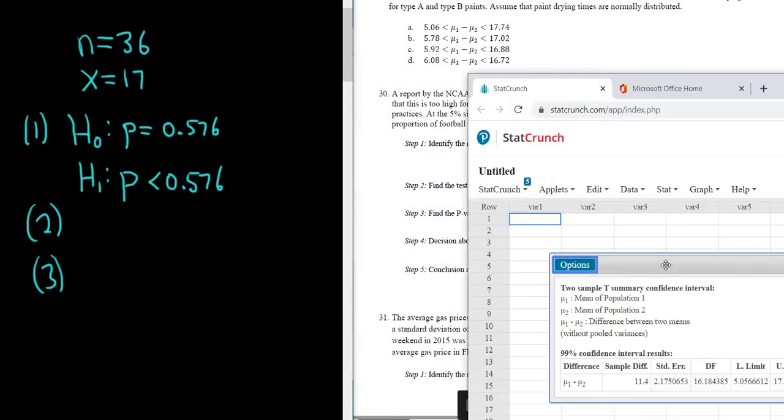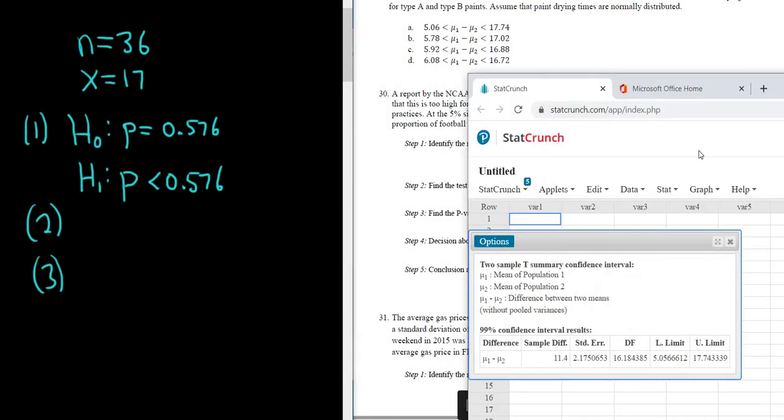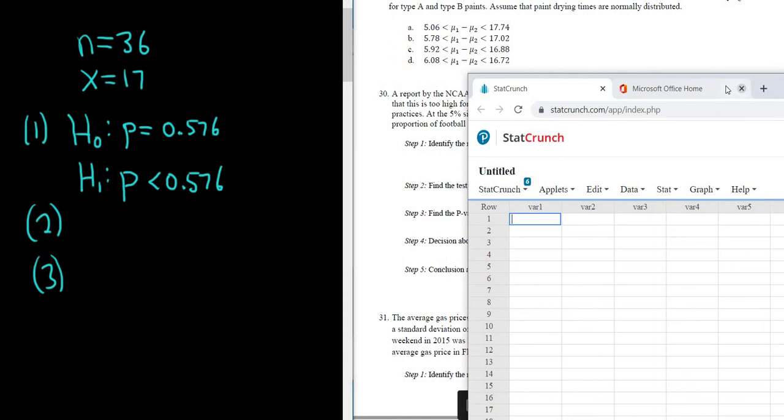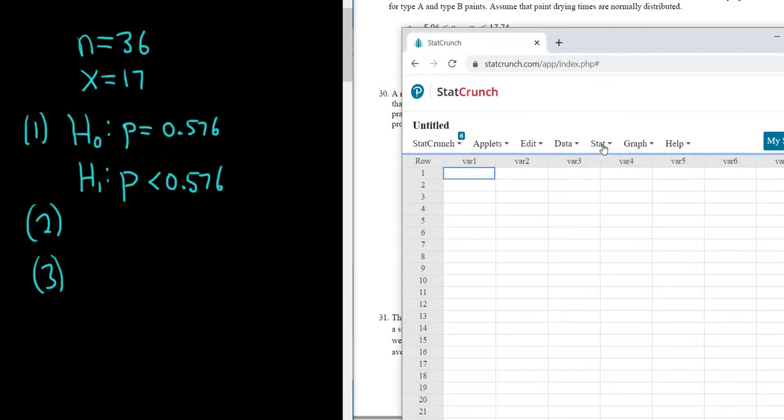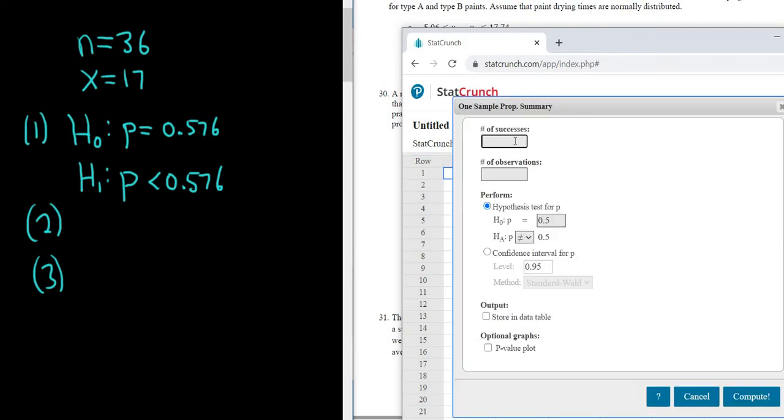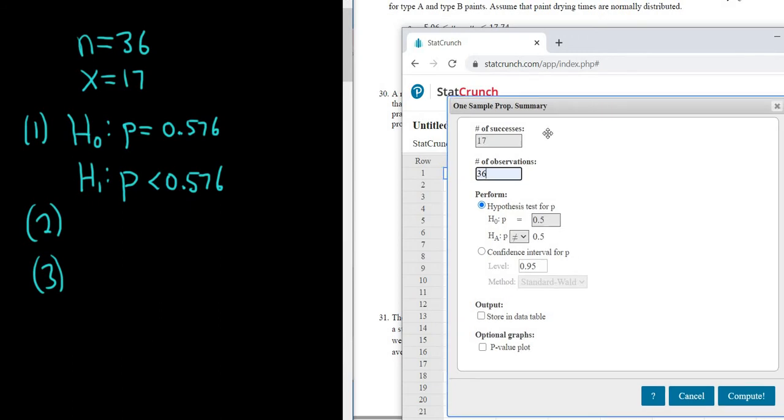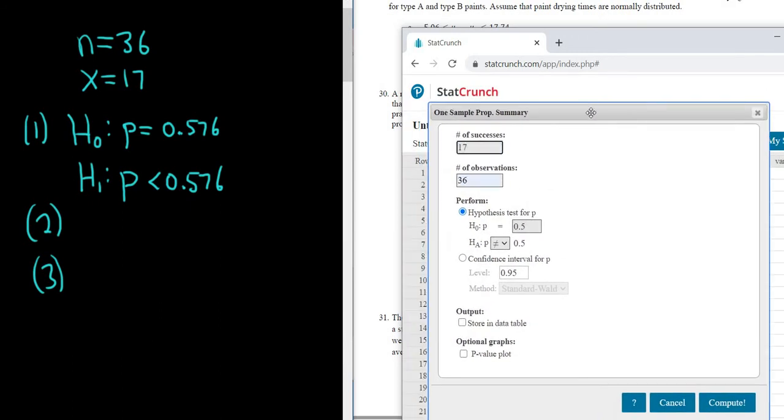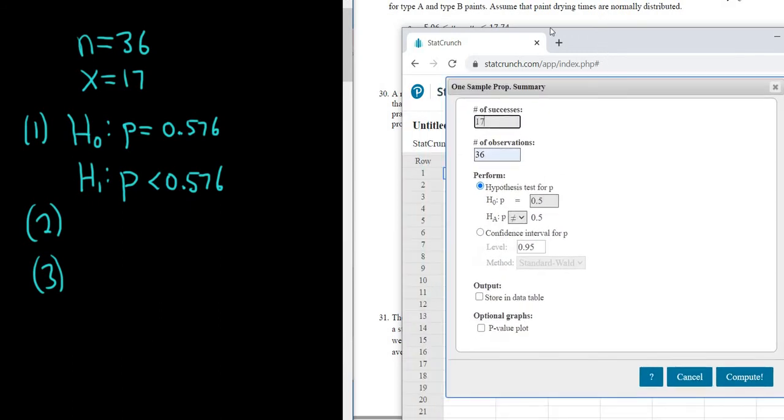So I'm going to go to StatCrunch, and then we just go to Stat, Proportion Stats, because we're dealing with proportions, one sample, and then with summary. Successes is our X, so 17. Oh, that's weird. It was already typed in. N is 36. Very strange. I have not done this problem before, and it's auto-completing the numbers.